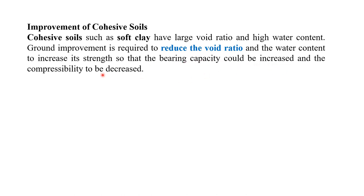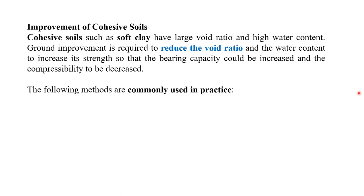The target in the improvement of cohesive soil is to increase shear strength so that bearing capacity could be increased and compressibility decreased. We have to reduce the void ratio so that we can increase the strength of the soil by increasing the bearing capacity and reducing the settlement.